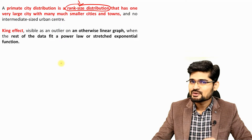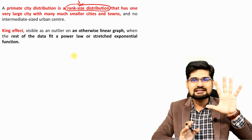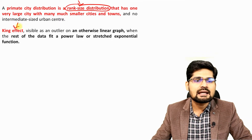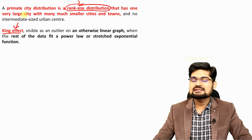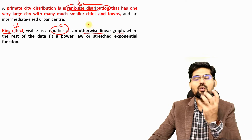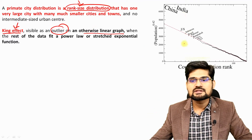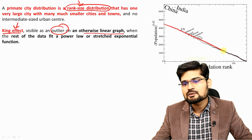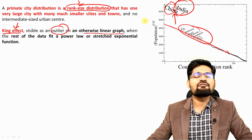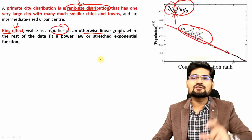We are not doing the rank-size rule here — that will be covered in a separate lecture. What we are looking at is the relationship between the first-ranked city and the second-ranked city, and something called the king effect. The king effect is when one data point is an outlier on a linear graph. For example, India and China have far, far larger populations than many other countries put together — that is the king effect.